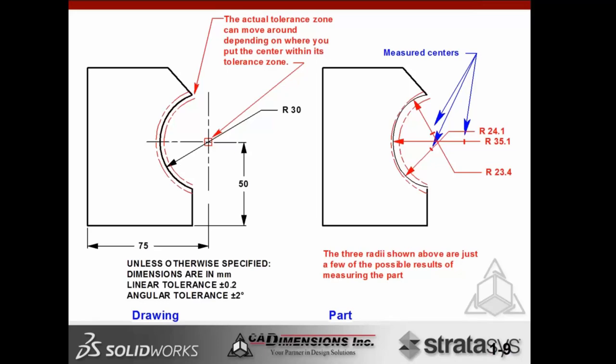Looking at a radius example: with plus or minus dimensioning, the dimension of 75 gets plus or minus 0.2, the 50 gets plus or minus 0.2, and the radius also gets plus or minus 0.2. The result is a movable target for the radius — you're mixing location tolerances with feature tolerances. We're trying to control the form of a radius with respect to the 75 and 50 dimensions, and we should not be mixing locating tolerances with feature tolerances.